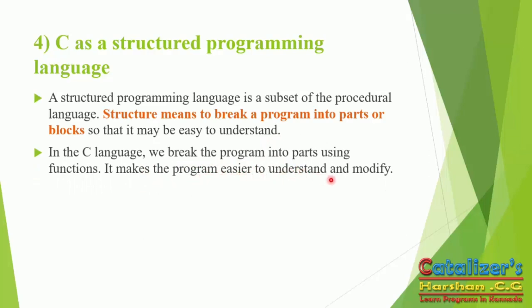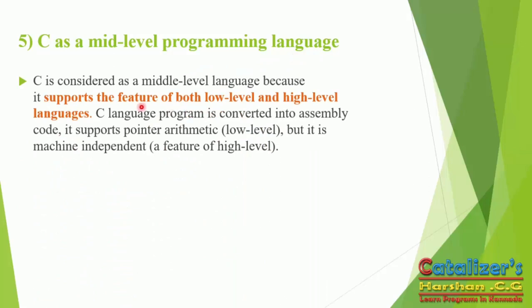C as a middle-level language: C is considered a middle-level language because it supports the features of both low-level and high-level languages. A C language program is converted into assembly code. It supports pointers and is machine independent, combining features of both high-level and low-level programming.